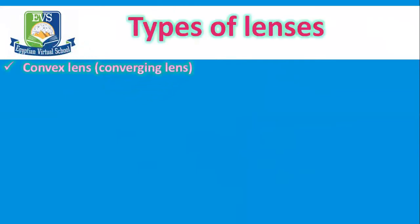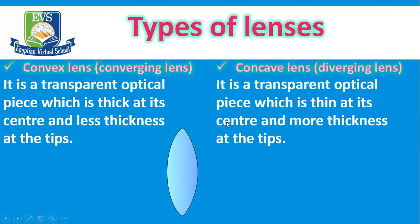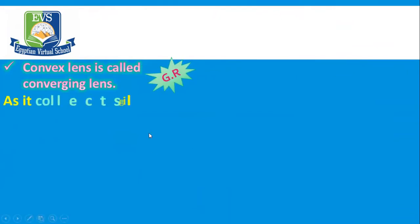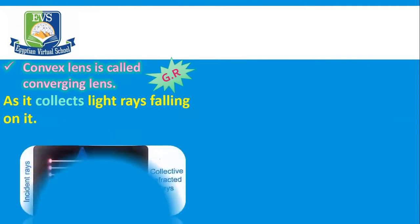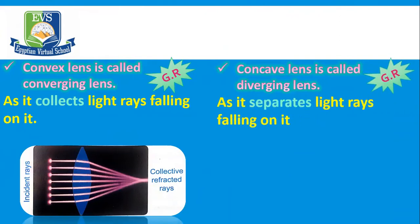Types of lenses. Number one, convex lens — it's called the converging lens. It's a transparent optical piece which is thick at its center and less thick at the tips. Give reason: convex lens is called converging lens as it collects light rays falling on it. Concave lens is called diverging lens. Give reason: concave lens is called diverging lens as it separates light rays falling on it.